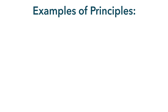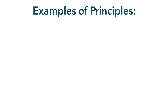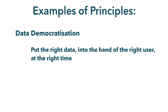Another example of a principle could be strive for consistency, with the sub-principle: use a common data vocabulary for all collaboration, regardless of the application or business function. And a third overall principle could be data democratization, with two example sub-principles: put the right data into the hand of the right user at the right time, and base all opinions on data.